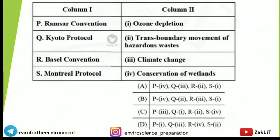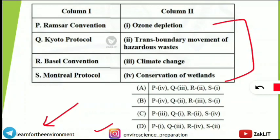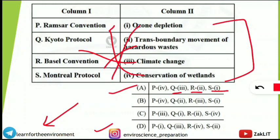The next question is a match-the-following, very easy if you are preparing for NET or any environmental science exam. On the left are convention or protocol names; match them to the correct environmental issue. Ramsar Convention matches with conservation of wetlands. Kyoto Protocol is related to climate change. Basel Convention matches with transboundary movement of hazardous waste. Montreal Protocol matches with ozone depletion. So option A is correct: P with 4, Q with 3, R with 2, and S with 1.